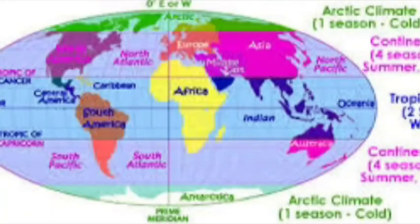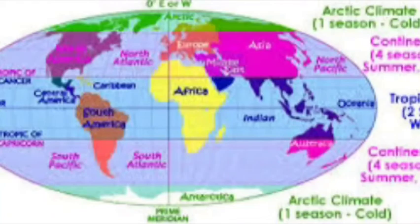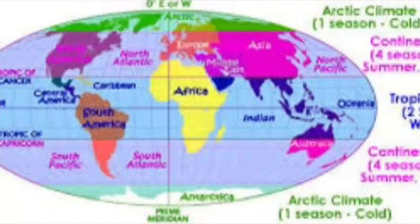Now let's look at the Temperate Zone. There are two types of Temperate Zone. The North Temperate Zone lies between the Arctic Circle at 66 and a half degrees North and the Tropic of Cancer. The portion between the Tropic of Cancer and the Arctic Circle falls in the Temperate Zone.